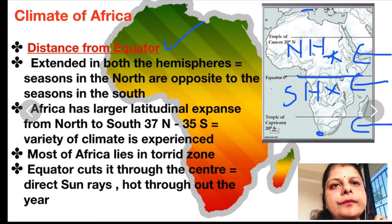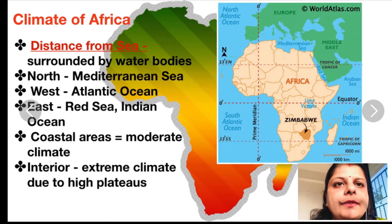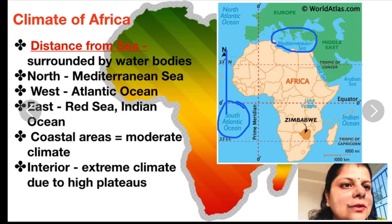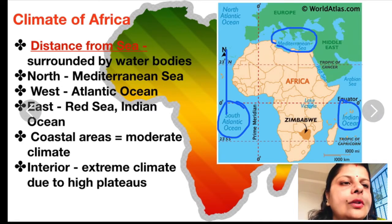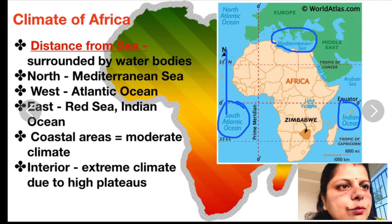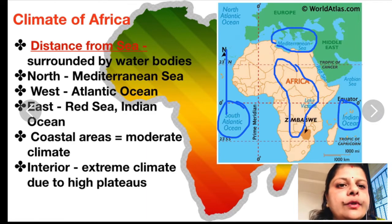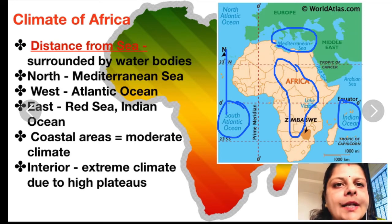The second factor is distance from the sea. Africa is surrounded by water bodies — the Mediterranean Sea in the north, the Atlantic Ocean in the west, and the Indian Ocean in the east. The coastal regions experience a moderate climate, neither too hot nor too cold. But as you move away from the coastal region, the interior part of the continent has an extreme climate. However, high plateau regions have a mild climate due to their higher altitude.